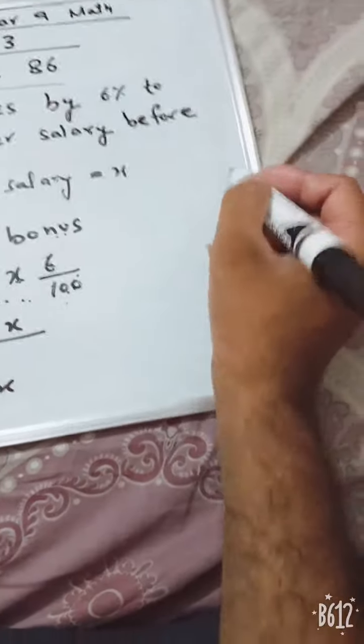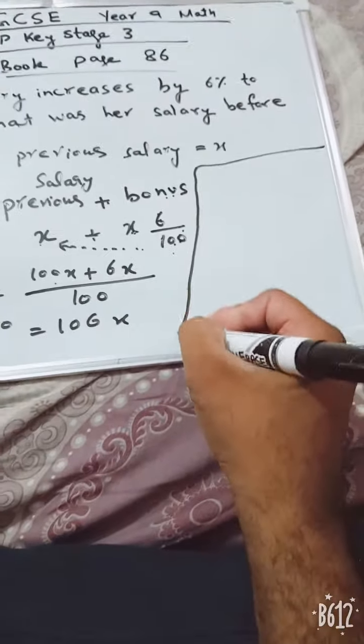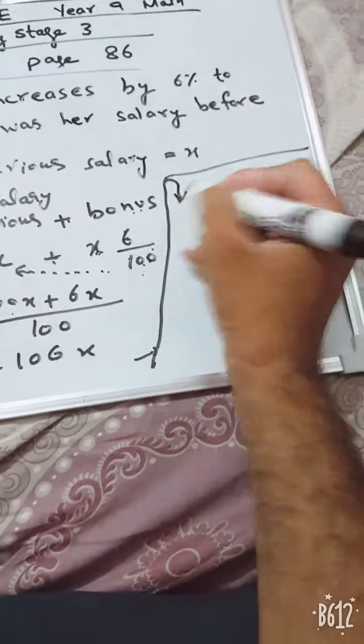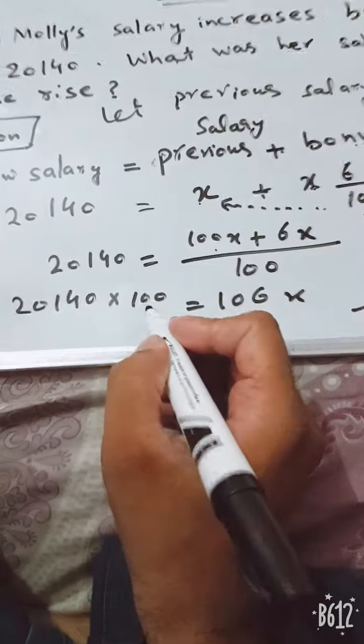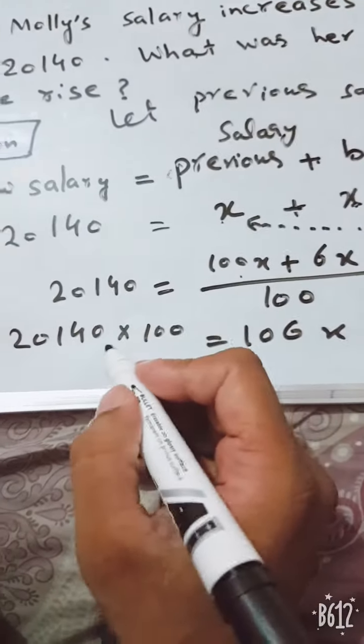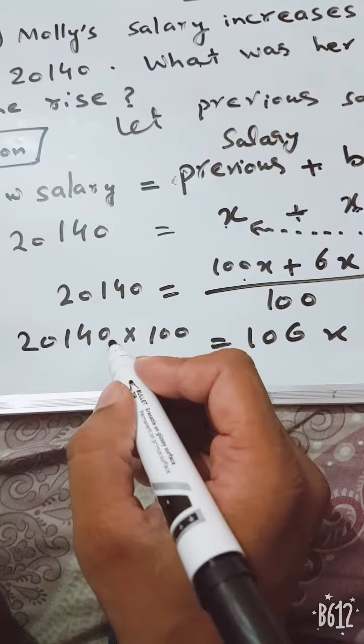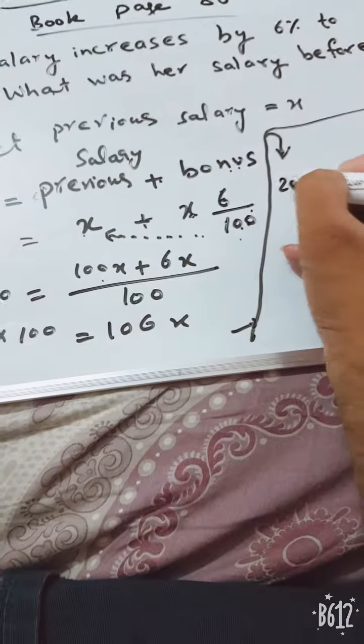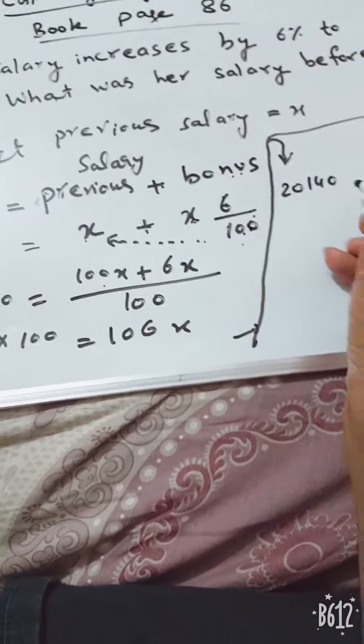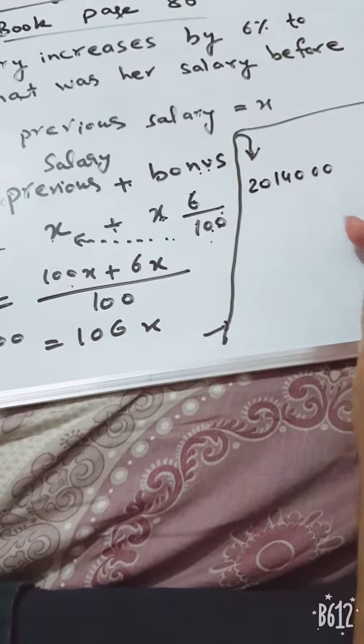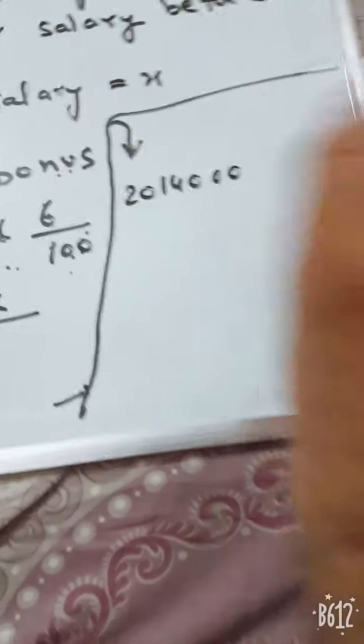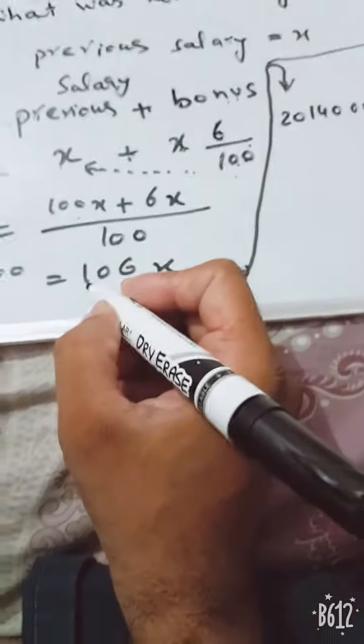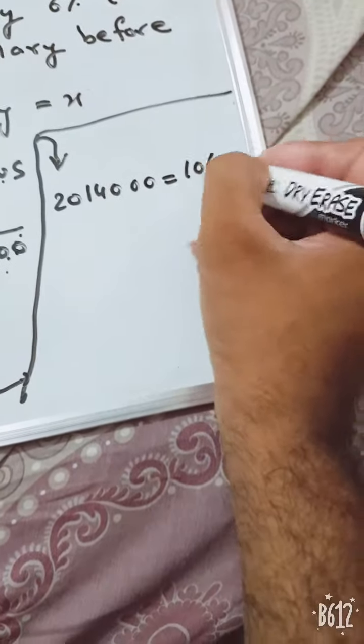Now let's use the other space here to complete our question. When £20,140 will be multiplied by 100, we will add two more zeros at the end. First write £20,140 and add two more zeros, equals 106x.